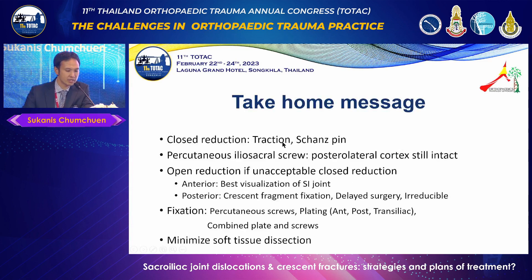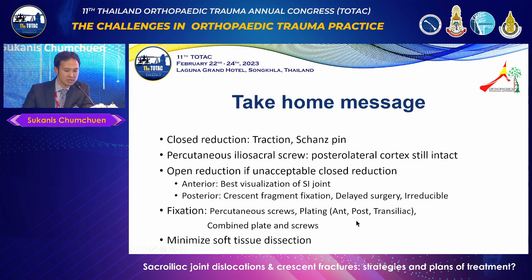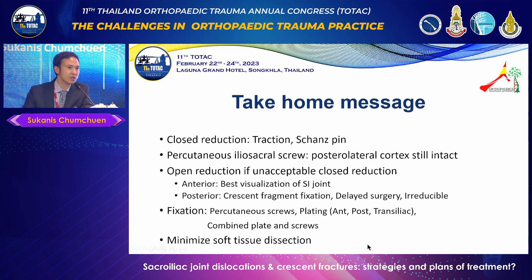Take-home message: closed reduction first for extraction using Schanz pins. Percutaneous screw if the posterior lateral cortex is still intact. Open reduction when closed reduction fails — anterior approach gives the best visualization of the SI joint. For crescent fracture fixation: if delayed surgery or irreducible, go posteriorly, using screw fixation or combined plate and screw. Do not forget to minimize soft tissue dissection when going posteriorly, as stripping all the muscle may increase infection rate. Thank you.